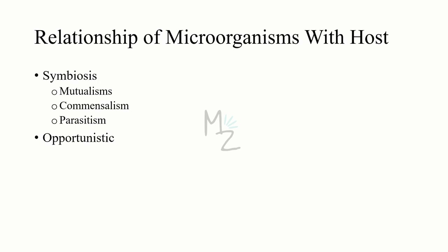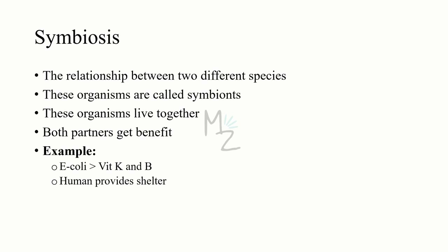Relationship of microorganisms with host. The main relationship is called symbiosis, which has subtypes: mutualism, commensalism, and parasitism. There is also the opportunistic relationship. Symbiosis is a relationship between two different species — for example, a human and a bacteria. These organisms are called symbionts. If both partners get benefit, this is mutualism. For example, E. coli is a bacteria that is a permanent resident of our intestinal tract. It produces vitamin K, which helps in coagulation by producing clotting factors, and vitamin B, which helps in digestion. In return, humans provide shelter and optimal environment to E. coli.